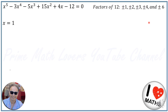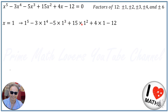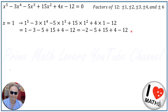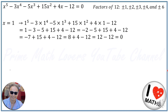Starting with plus 1, we substitute x and evaluate whether the result on the left side of the equation equals zero or not. So we have 1 to the power of 5 minus 3 times 1 to the power of 4 minus 5 times 1 to the power of 3 plus 15 times 1 to the power of 2 plus 44 times 1 minus 12. This gives us 1 minus 3 minus 5 plus 15 plus 4 minus 12, and continuing the calculation we get 12 minus 12 which is zero. Testing with plus 1 gives zero, indicating that plus 1 is one of the roots of the equation, meaning the left side is divisible by x minus 1.